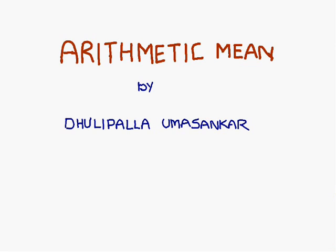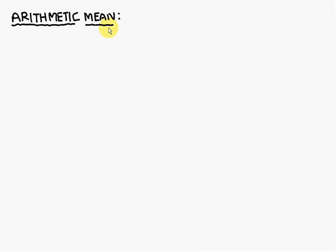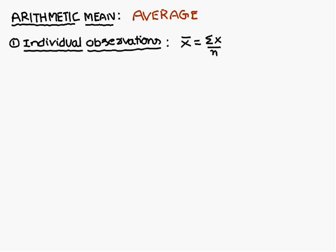Today we are going to discuss arithmetic mean. Simply, arithmetic mean is the average. To find the average, you come across three different types of problems. The first model problem is individual observations, and the formula for this one is x̄ = Σx/n. Now let us see how to apply this formula.